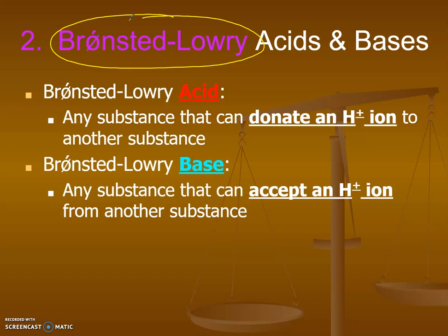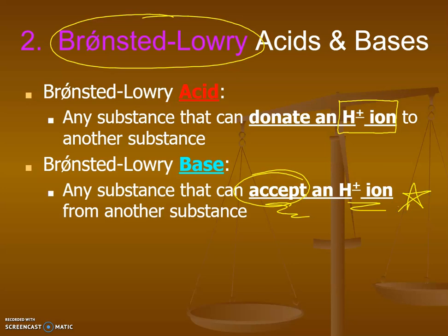This is modified from Arrhenius — very similar, but modified. Bronsted-Lowry said that an acid can donate an H+ ion, which is essentially just a proton, so that's pretty much the same. The Bronsted-Lowry base is an acceptor of the H+ ion, which is a major difference from Arrhenius. The Bronsted-Lowry definition is what we are primarily going to use as our working acid-base definitions.